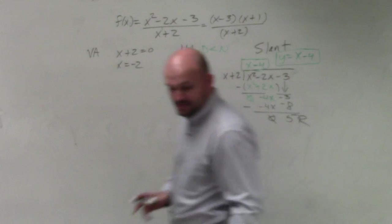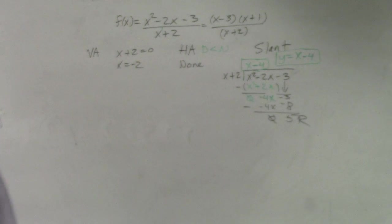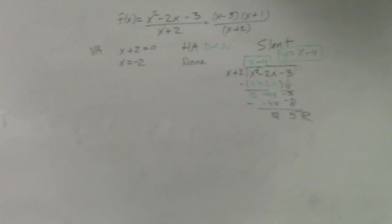All right, so that is how to find the asymptotes. But then again, we need to find the intercepts, correct?